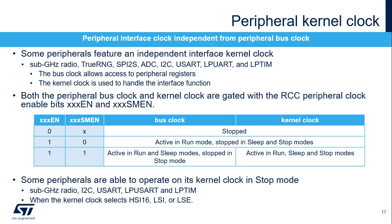Some peripherals have a separate clock for the processor bus interface and the specific peripheral interface function. The bus clock is used to access the peripheral registers, whereas the kernel clock is used for the specific peripheral interface function. Having a separate bus clock and kernel clock allows the application to change the interconnect and processor working frequency without affecting the peripheral operation. For example, the USART kernel clock is used to generate the baud rate for the serial interface communication, and the bus clock for the register interface. The enabling of both the peripheral bus clock and kernel clock is controlled by the reset and clock controller's peripheral enable and sleep mode enable bits. When both bits are set to one, the peripheral is able to operate and transfer data in sleep mode.